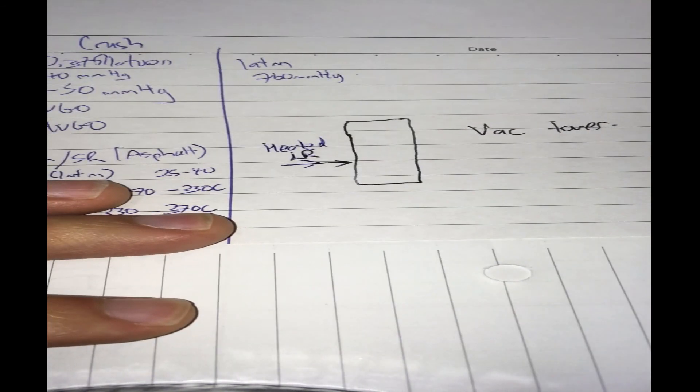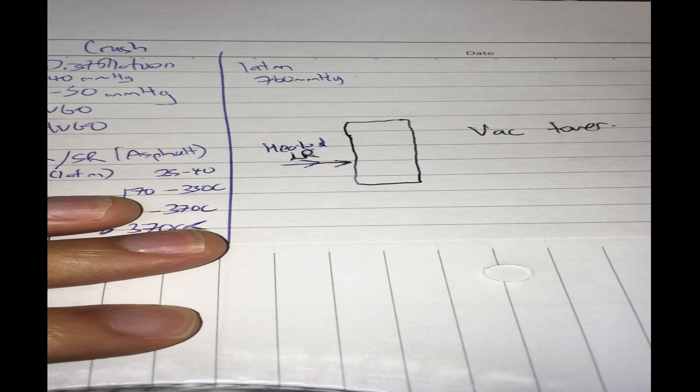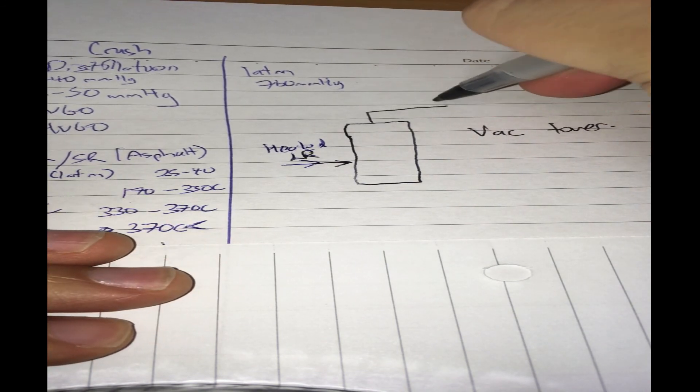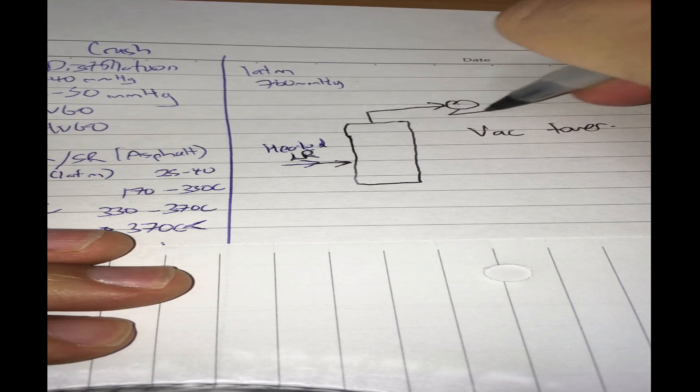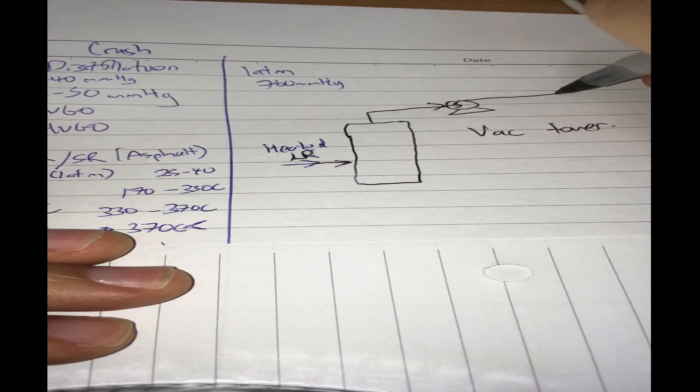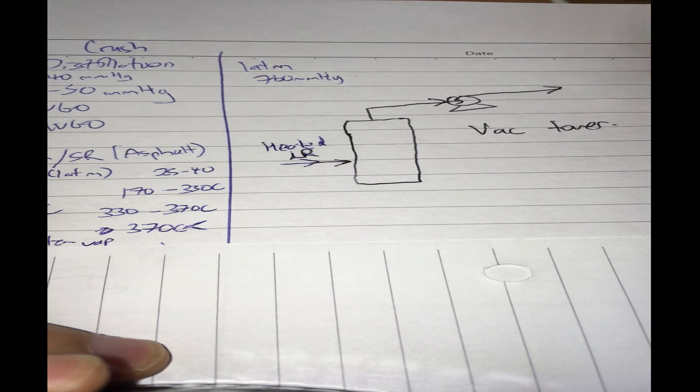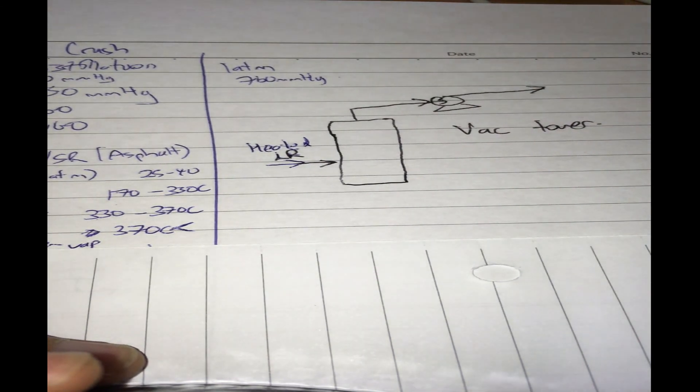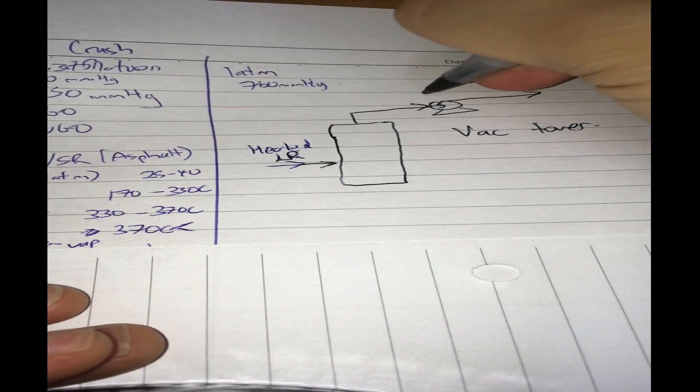First of all, you might ask where does the vacuum actually come from? Turns out that all you need to do is to have a compressor at the top of the tower that's pumping air and vapor continuously out of the tower.